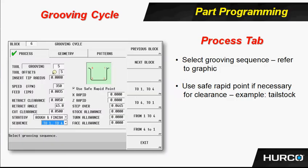Moving on to the grooving cycle. Here we see a screenshot of the grooving cycle itself. Notice that we now have three tabs instead of just two: the process tab for strategy, the geometry tab to describe the finished product of the groove itself, and then if this particular groove happens in sequence or there's more than just one that we're cutting, then we have a screen for patterns as well.